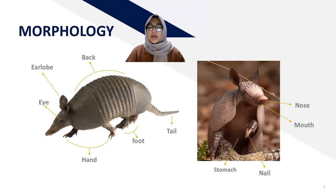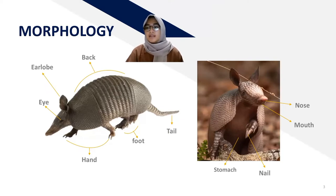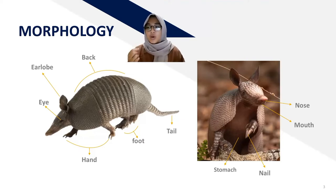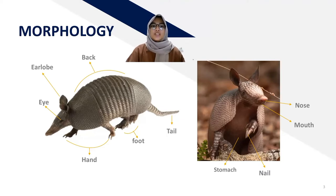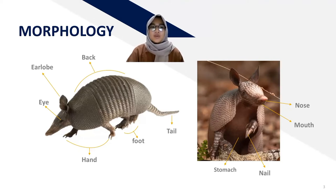For morphology, armadillo animals have an earlobe, back, hand, foot, tail, stomach, nail, nose, and mouth. The word armadillo comes from Spanish, meaning 'the little armored one.' It is called this way because this animal has bone plates that cover its head.